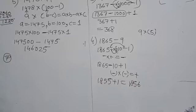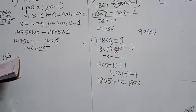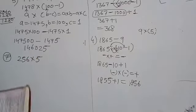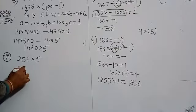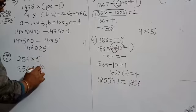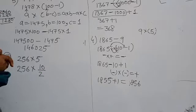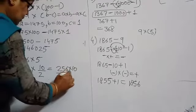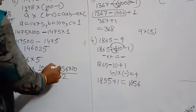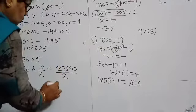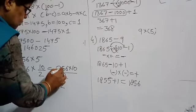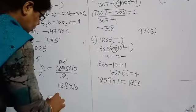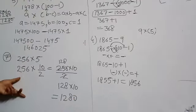For question number 7, I taught you the minus form, but it is better that you do this question using the division form. We always need to write the number in the form of 10. So 5 can be written as 10 upon 2, which means 256 multiplied by 10 divided by 2. You can then cancel: divide 256 by 2 to get 128, multiplied by 10, which gives 1280.